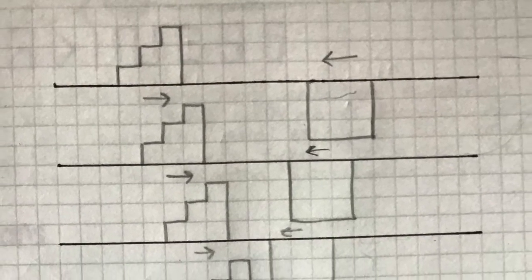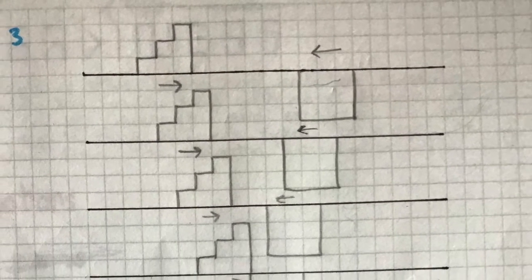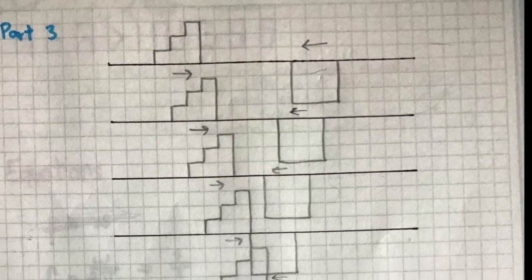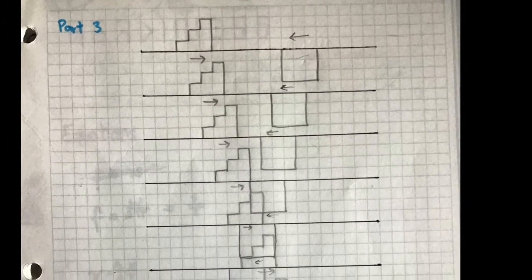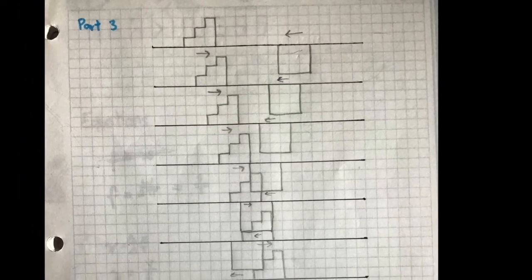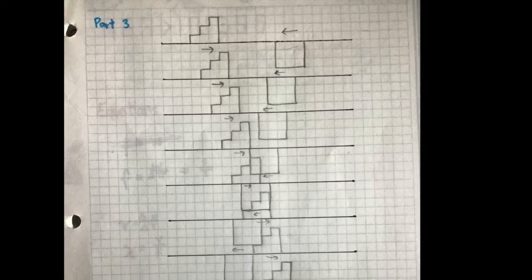This time, we have on the left, moving towards the right, a ladder-shaped wave. And at the right, moving towards the left, we have a square-shaped wave.